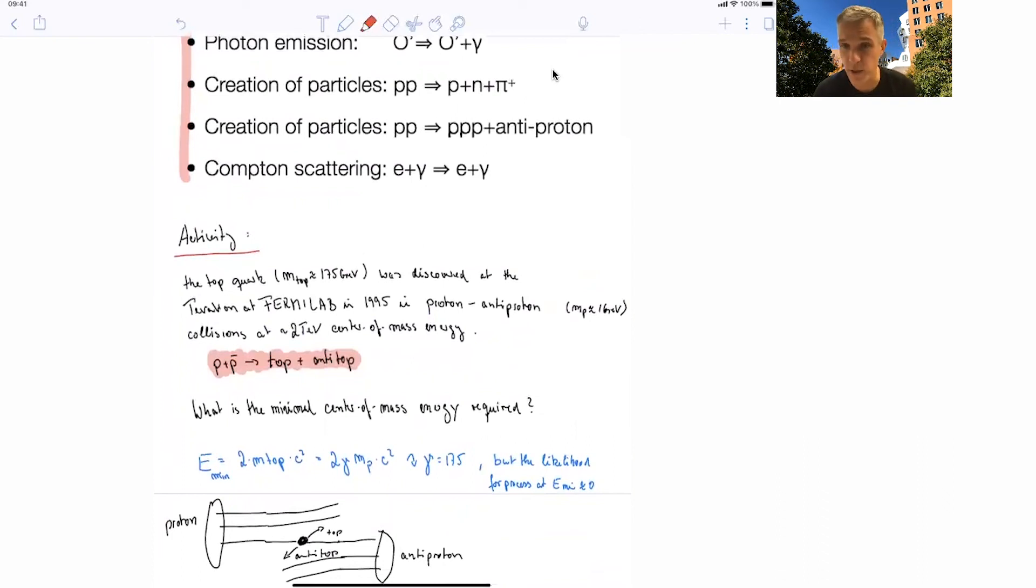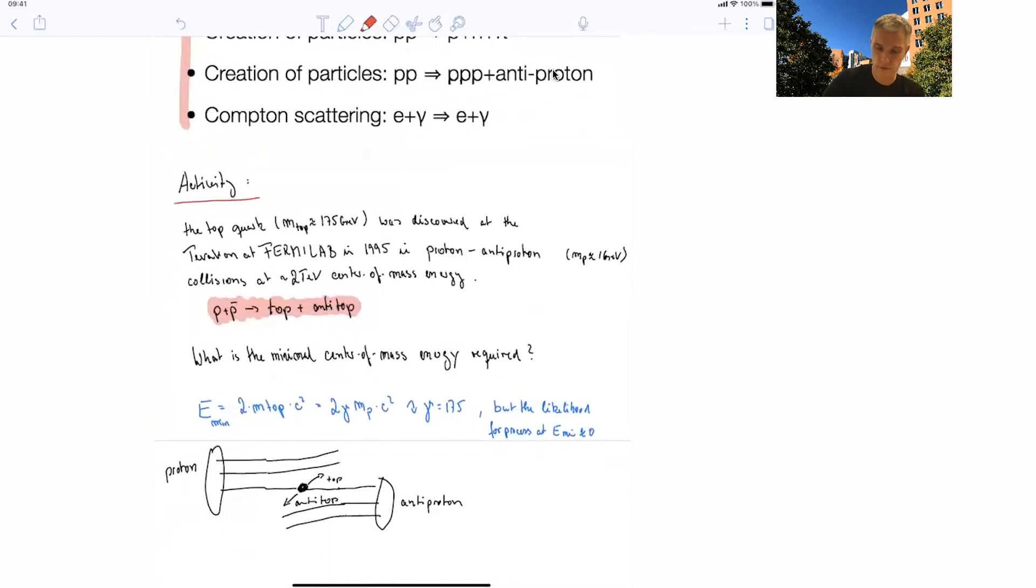But the likelihood to actually observe the top quark and the antitop quark at that energy, 175 GeV proton or antiproton energy, is rather zero. And the reason for this has to do with the structure of the proton. The interaction between the proton and the antiproton is such that the quarks inside, the quarks and antiquarks inside the proton and also the gluons interact. And they already carry a fraction of the momentum and the energy of the proton, and hence, this minimal calculation is insufficient to get a sufficient cross-section likelihood for top quarks and antiquarks to be produced. But that is particle physics and goes beyond the scope of this lecture.